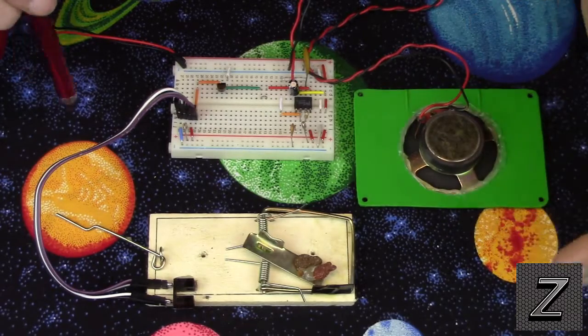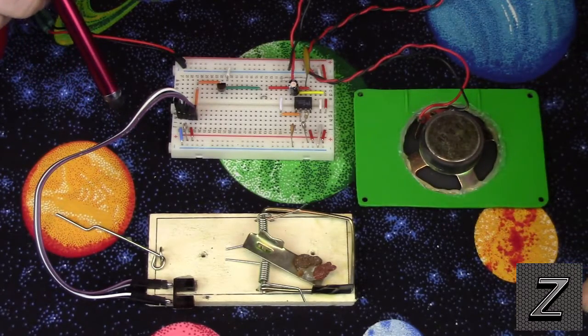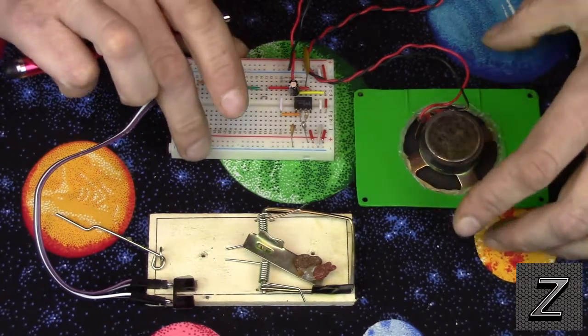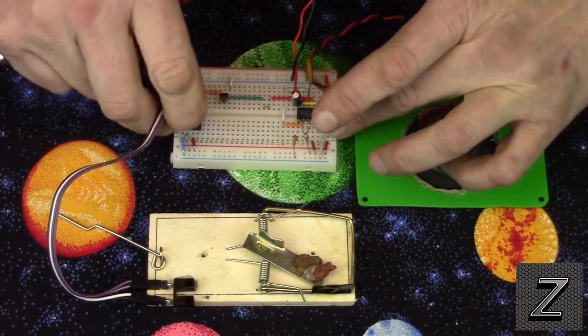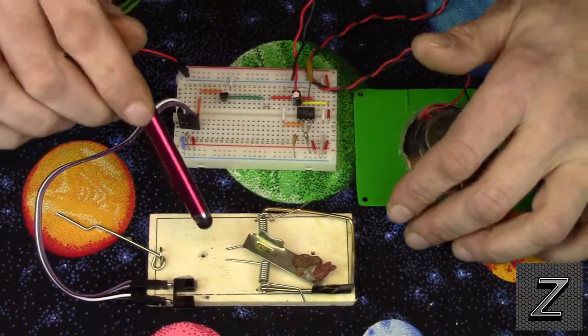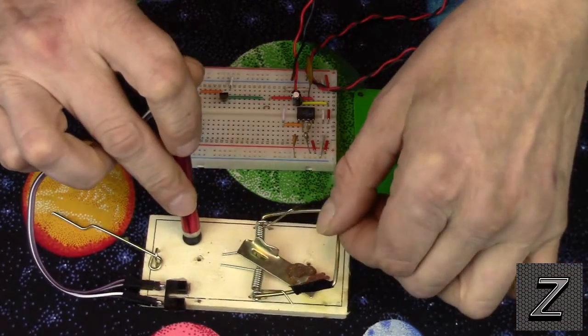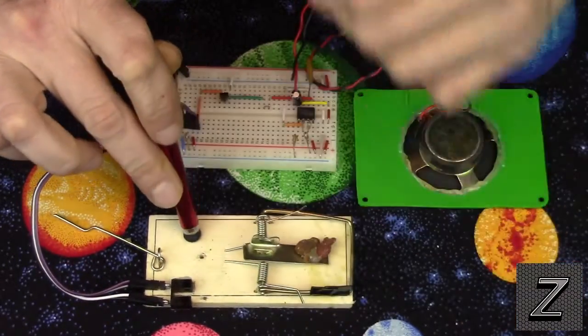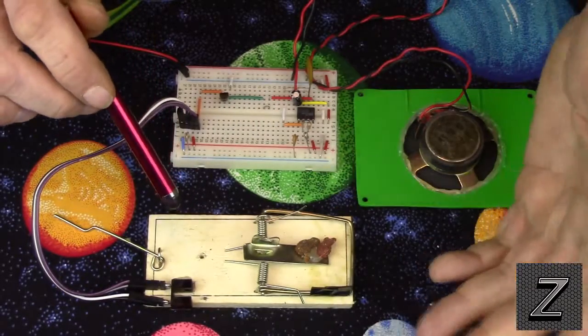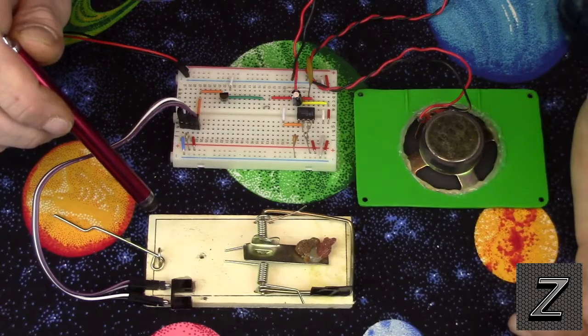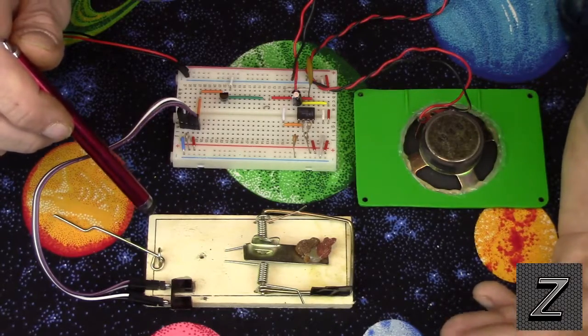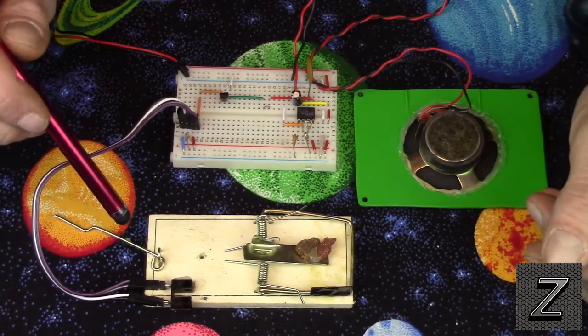This is a real, real simple project to build. If you're a beginner in electronics, give this a try. This is a real easy project and it's kind of fun. And the nice thing is, I mean, if the trap goes off, you don't have to go and actually visually inspect it. You just listen. There's a tone. Well, that means it's sprung.